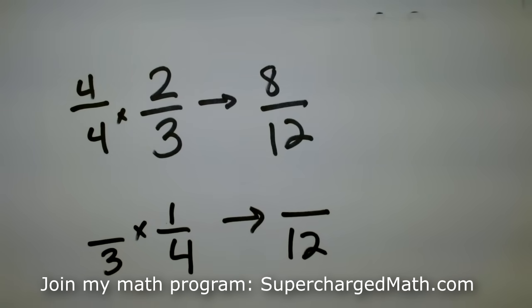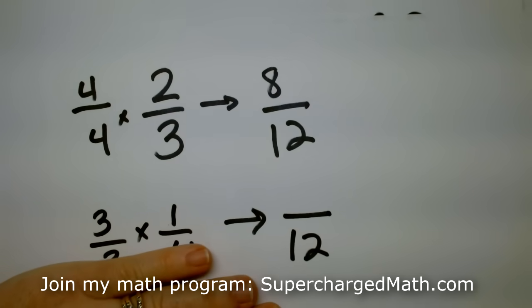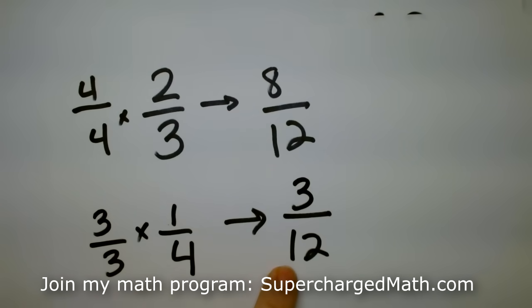In order to multiply this fraction by one and not break any rules, I have to multiply top and bottom by the same. So you tell me, what is three times one? You're like, oh, that is three. Easy. And three times four is twelve.